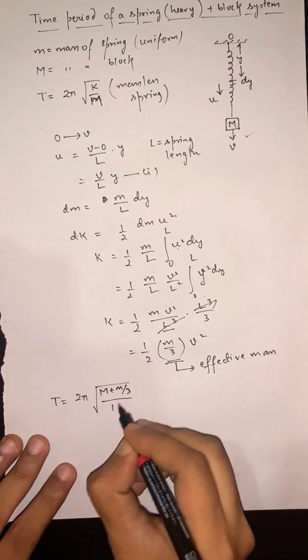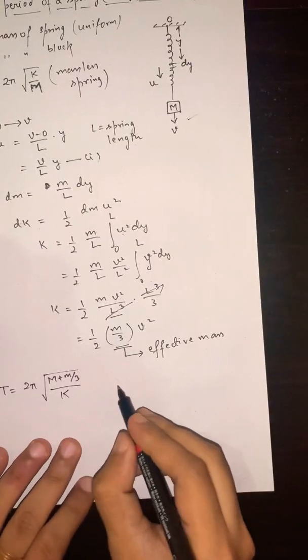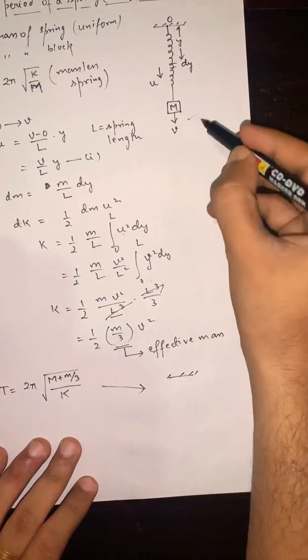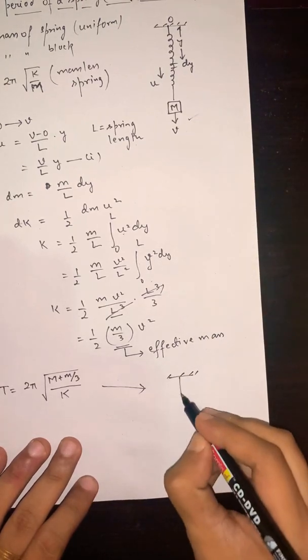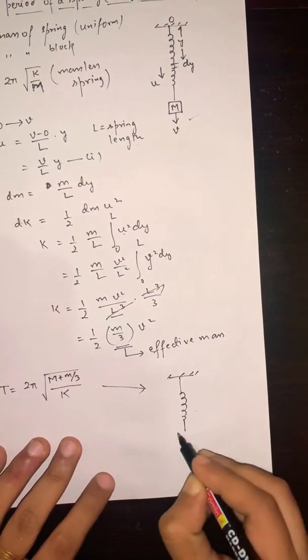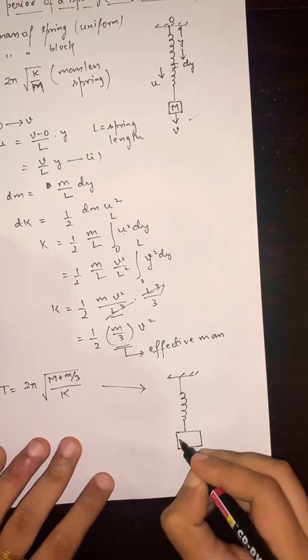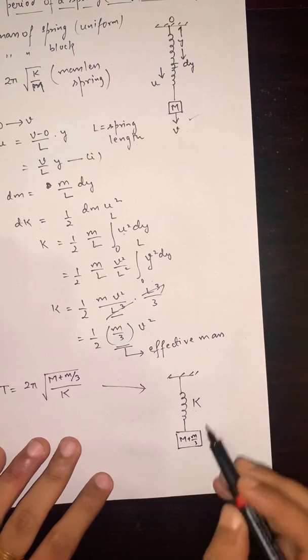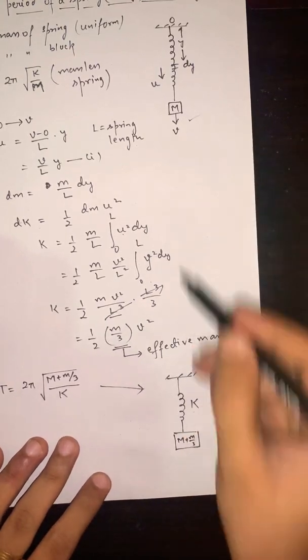Basically we're replacing this whole figure with a system where the spring is massless and the block has mass M + m/3. In this case both systems are the same.